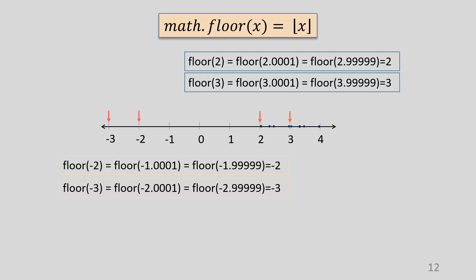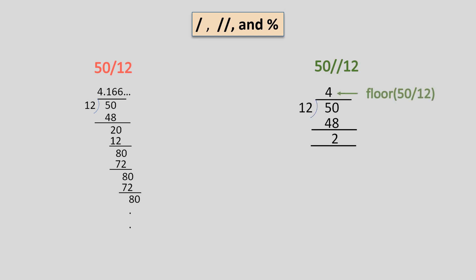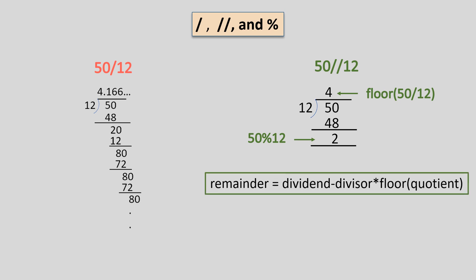After clearly understanding the concept of floor of a number, we can now move to see the relationship between normal division, floor division, and the modulo operator. The normal division operator — a forward slash — always returns a floating point quotient which may be precise up to 15 digits of decimal point. Floor division always returns the floor of the quotient. The remainder is obtained by applying the formula: remainder = dividend minus divisor multiplied by floor of quotient. To calculate the remainder, we always use the floor of the quotient in the formula.